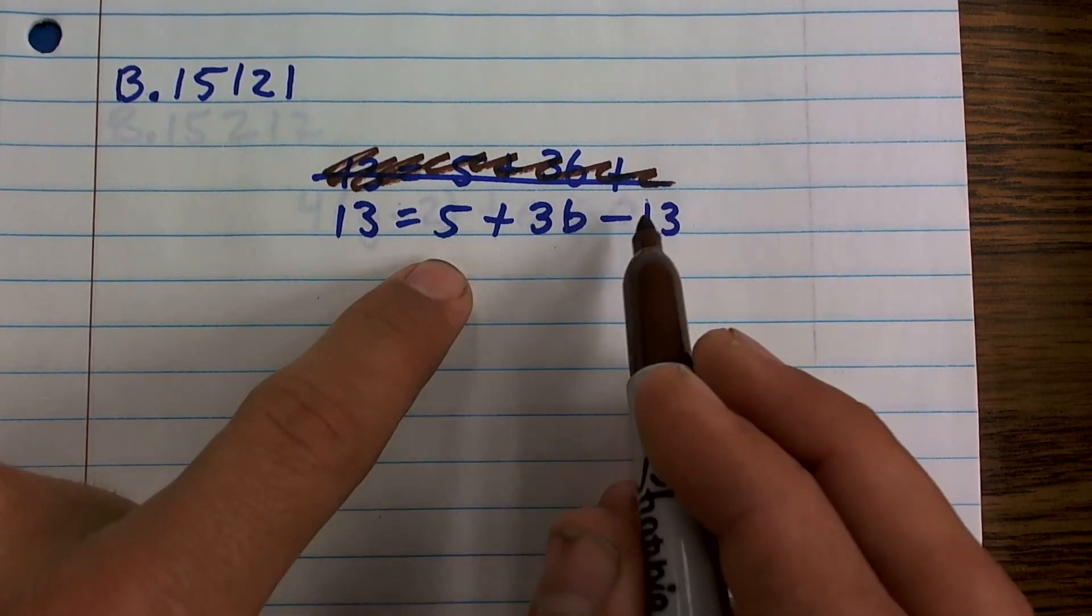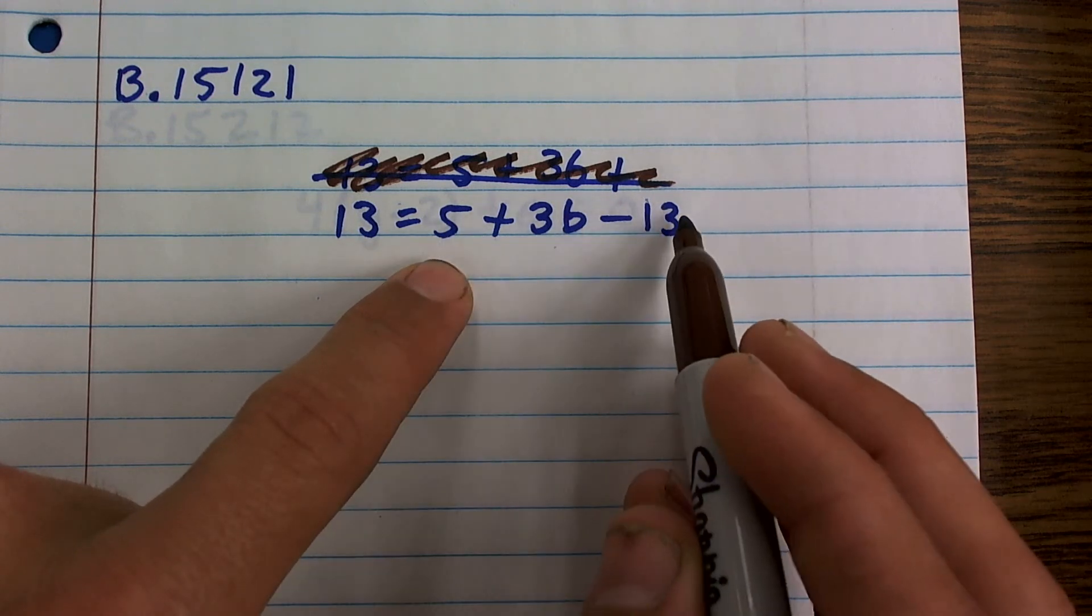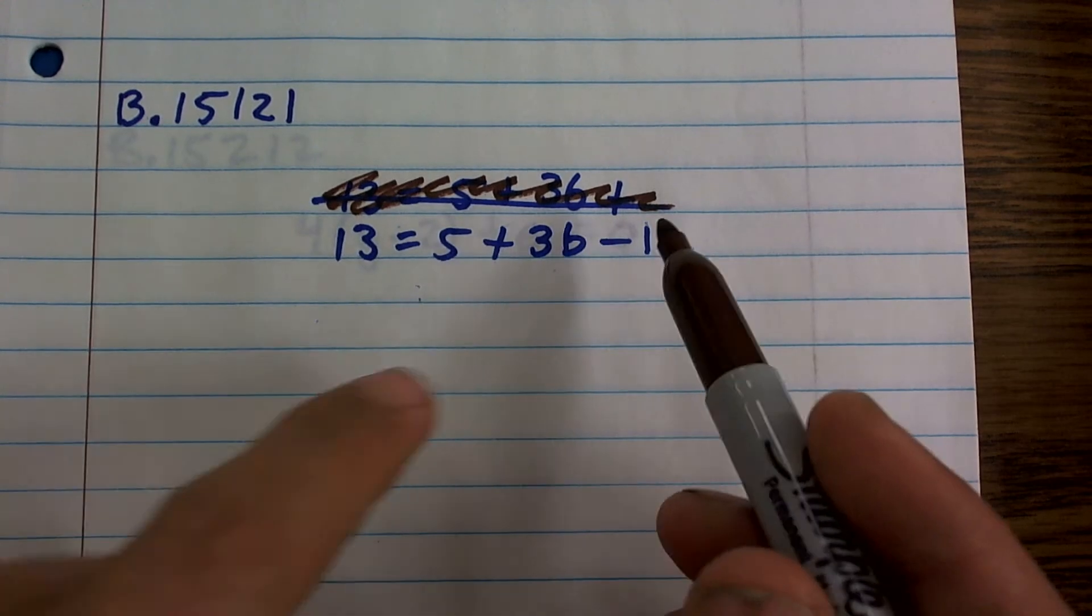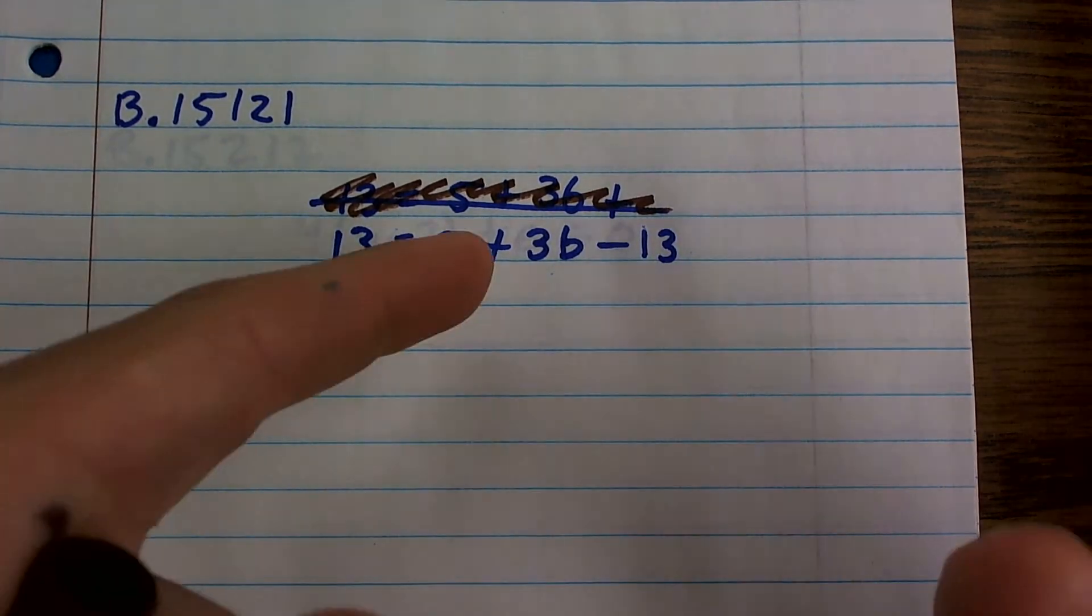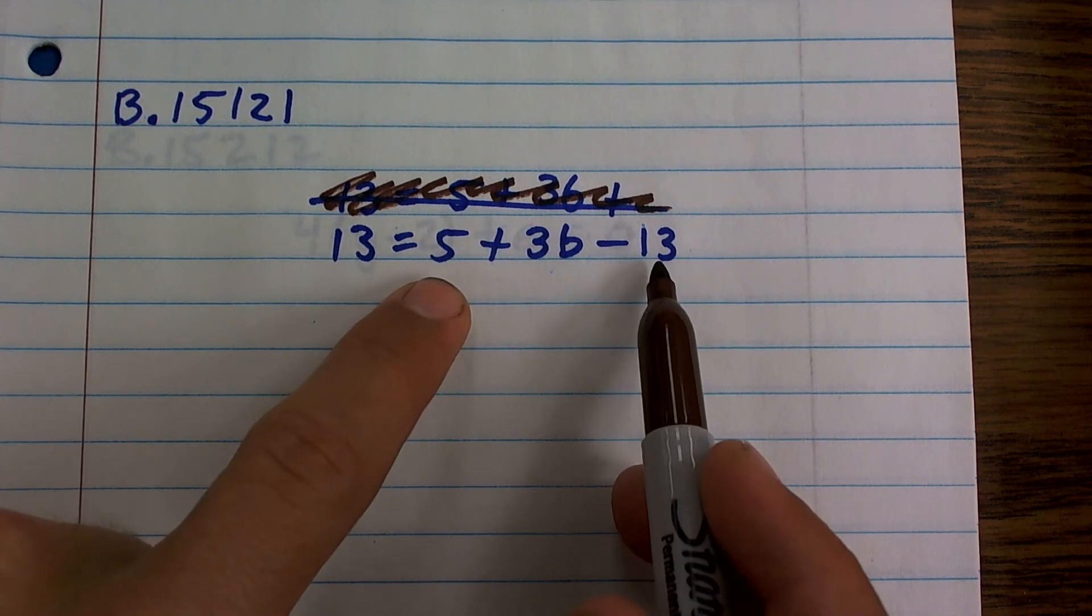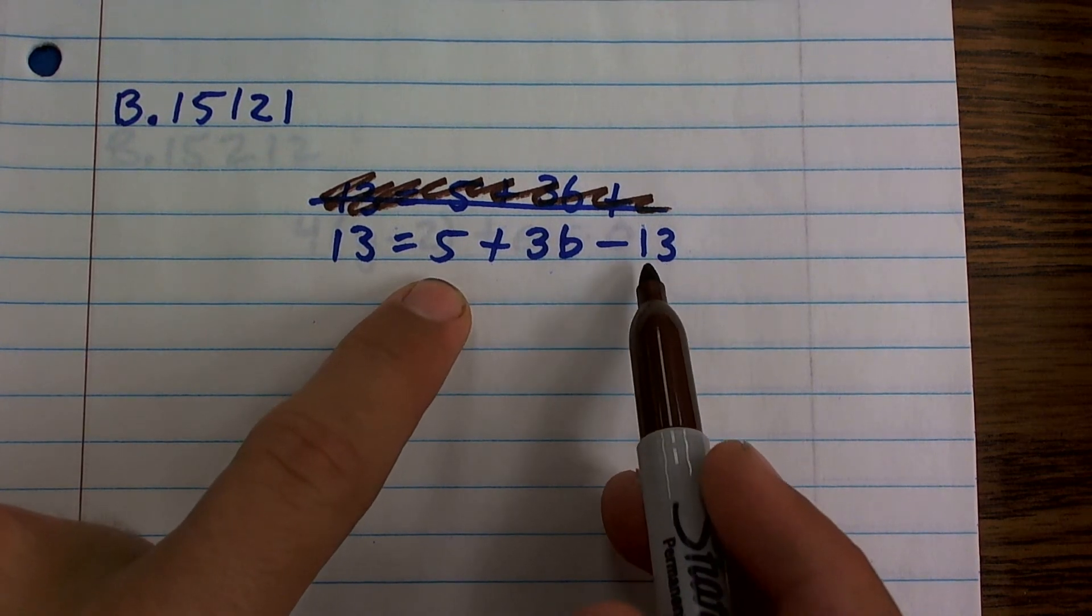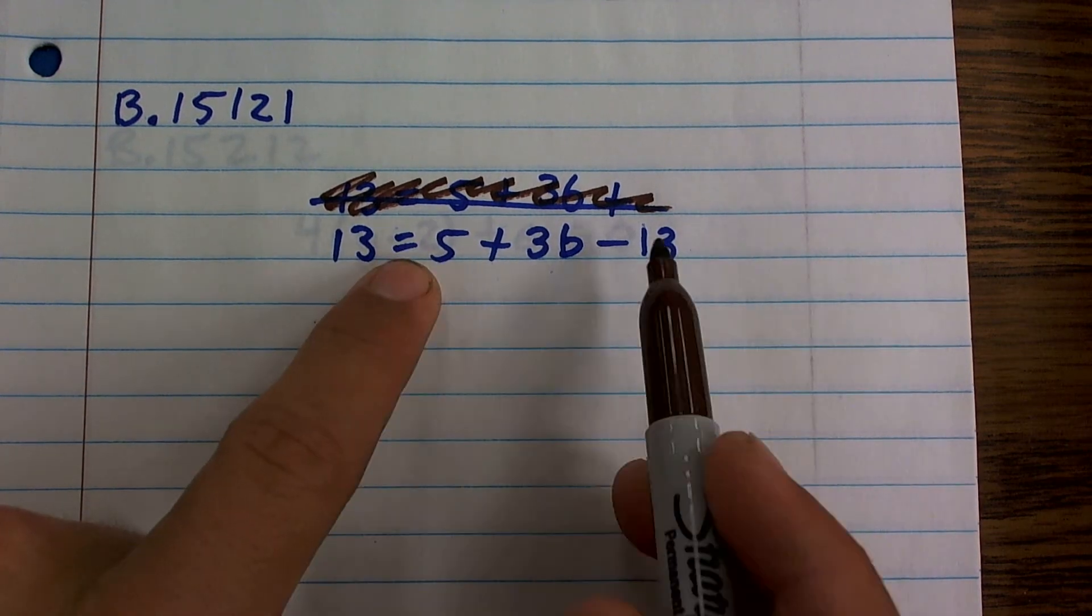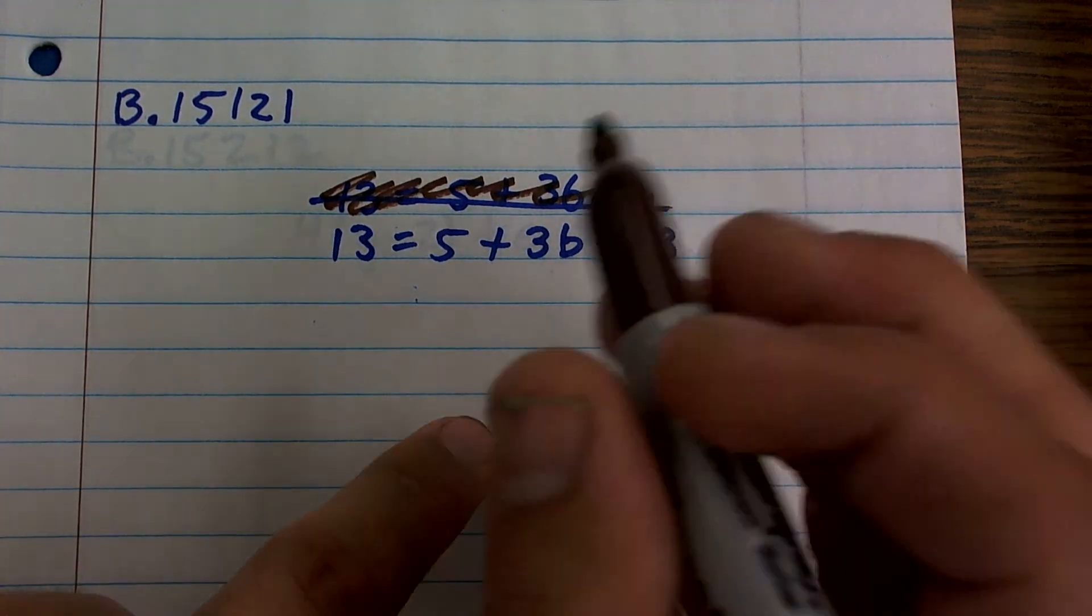You can still take positive 5 minus 13, which is going to be a negative 8. If you want to use associative property to rewrite it, that's fine. You can do that as well, but positive 5, since these are both numbers, they're what we say like terms, so I can combine them. So 5 minus 13 is going to be a negative 8.